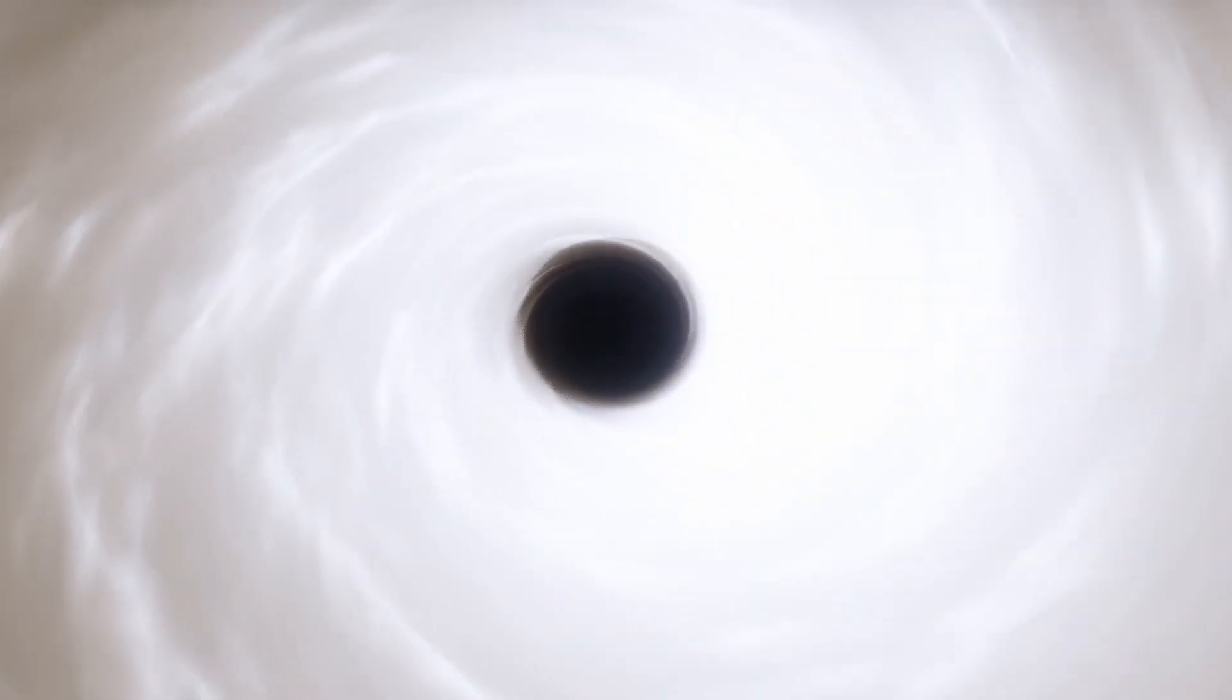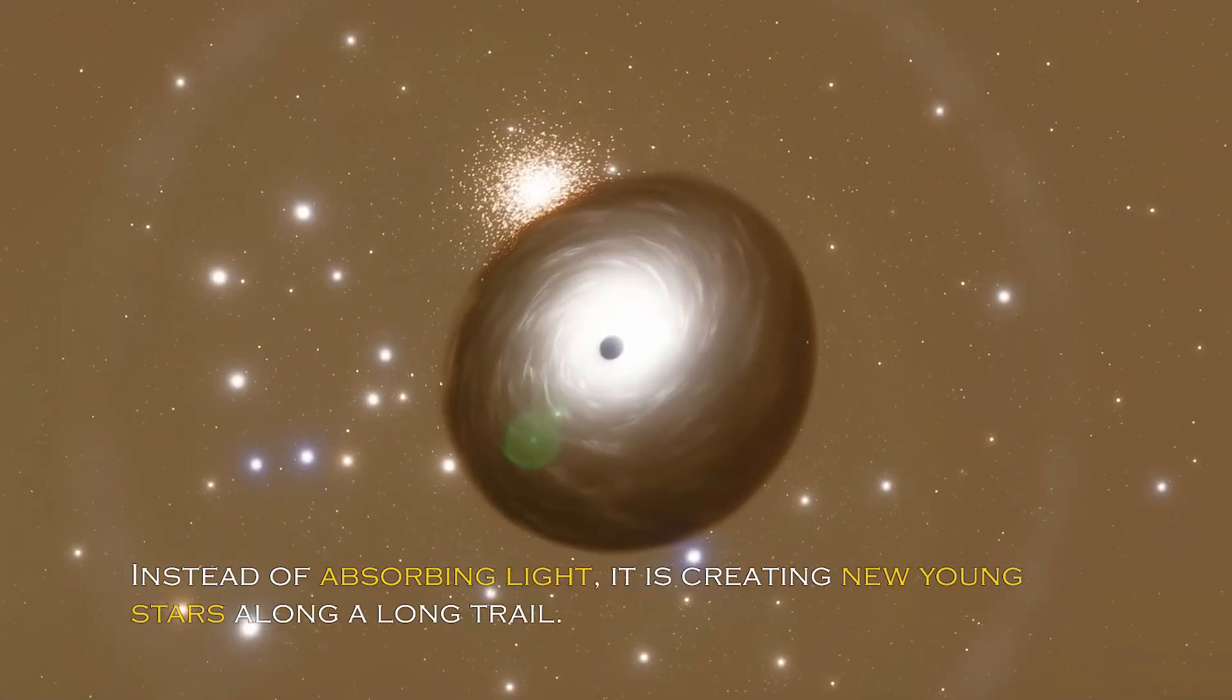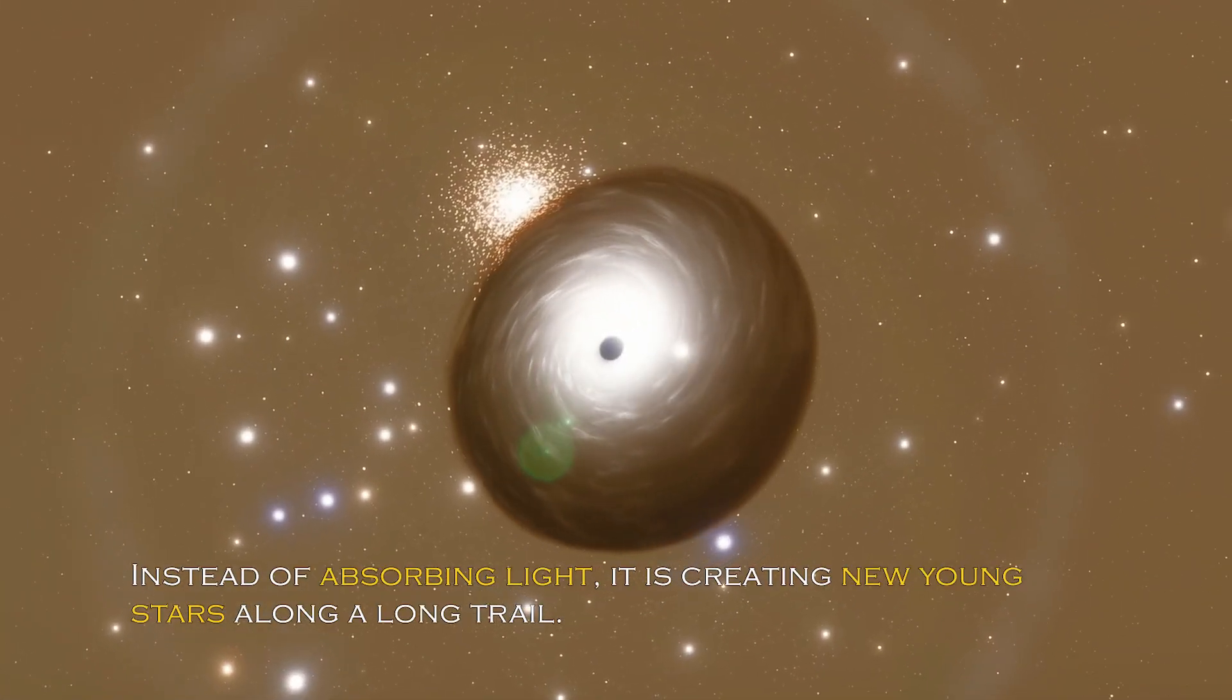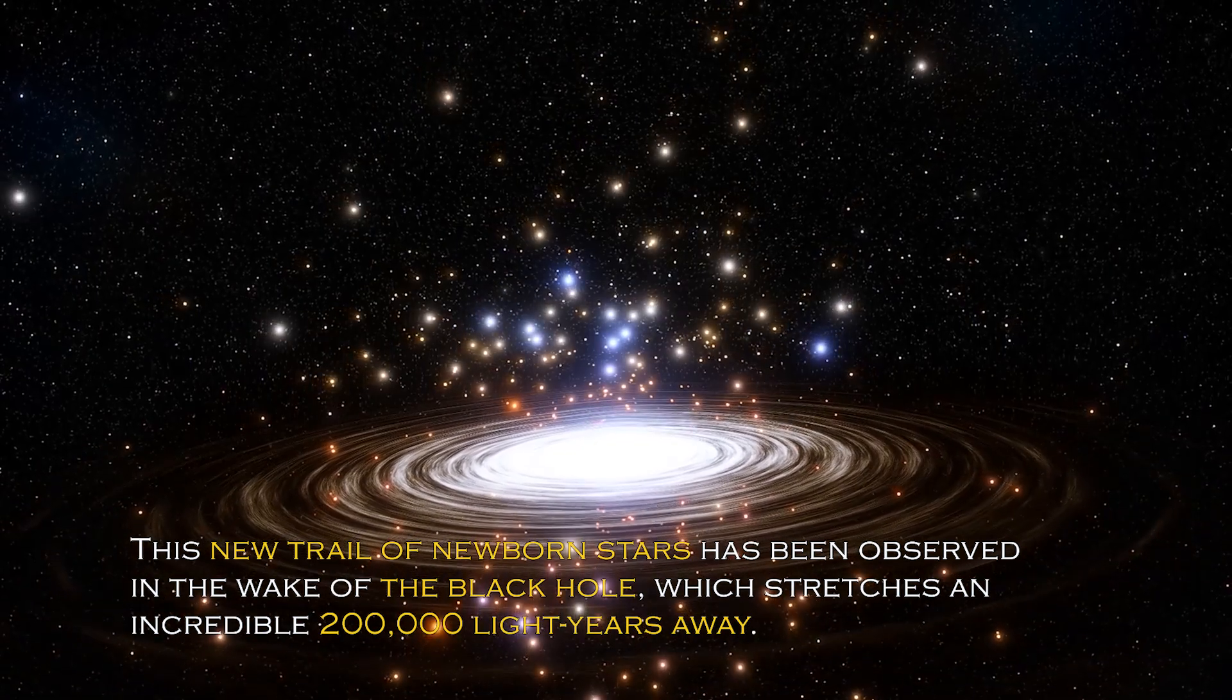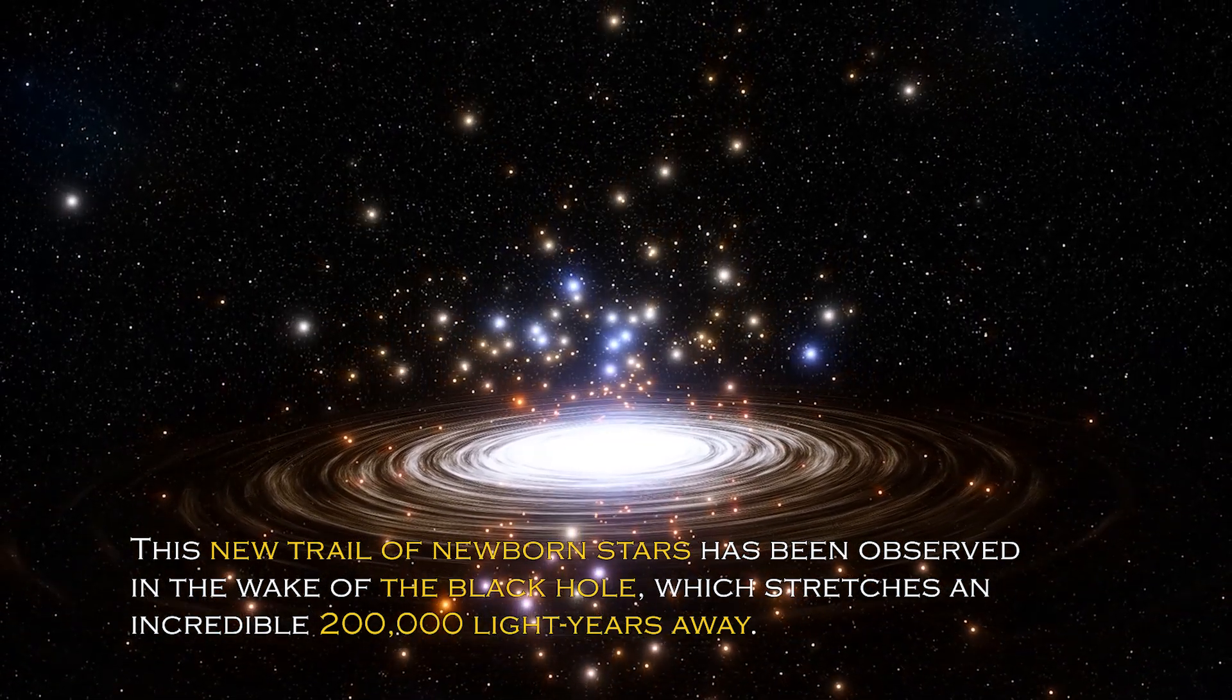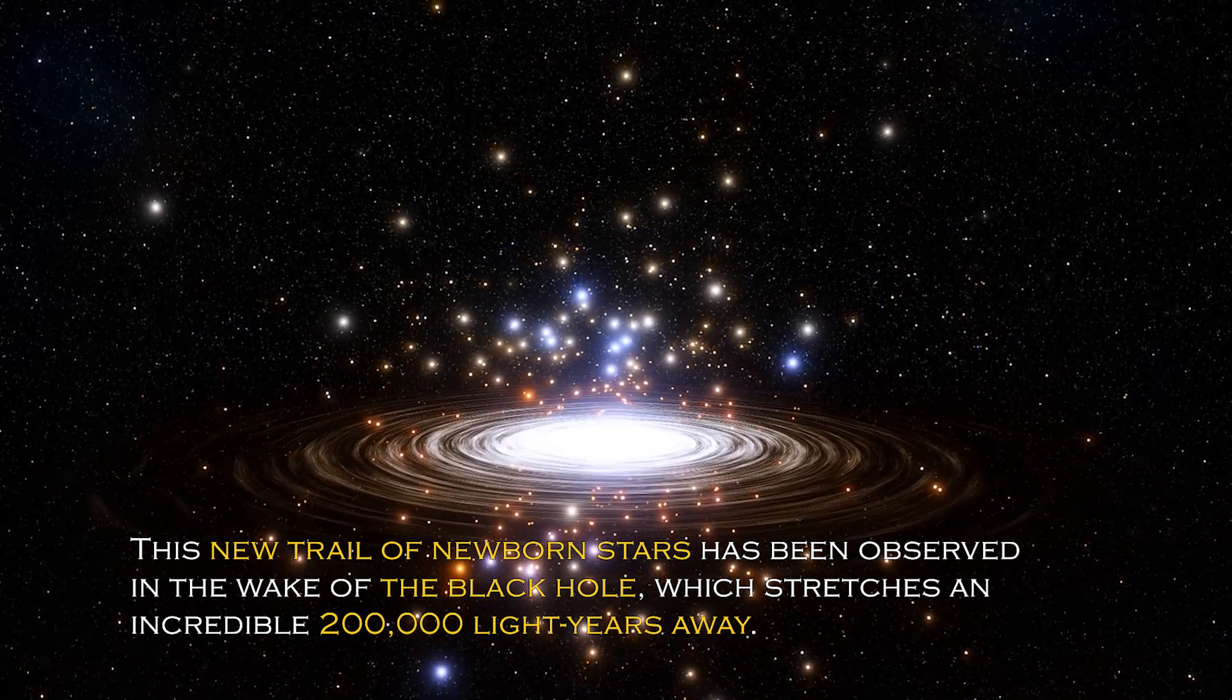Black holes are generally thought of as huge entities that pull everything including light towards them. But the recently observed black hole appears to be having the opposite effect. Instead of absorbing light, it is creating new young stars along a long trail. This new trail of newborn stars has been observed in the wake of the black hole, which stretches an incredible 200,000 light years away.